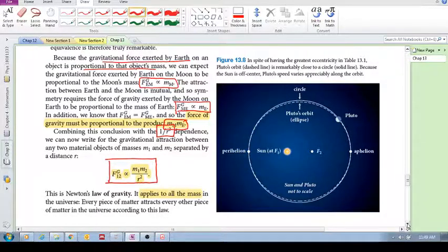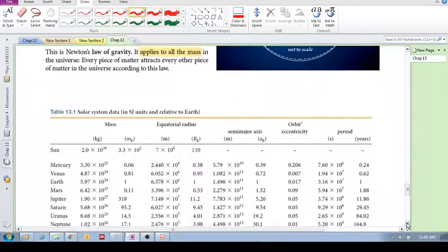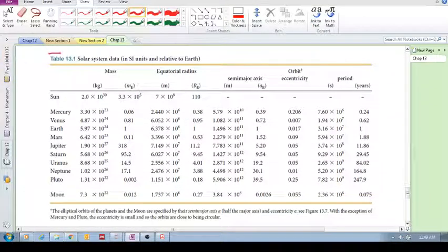So if you go to this next table, table 13-1. What does table 13-1 show? It shows solar system data, shows the sun, and then it shows all the planets, including Pluto, that are revolving around.